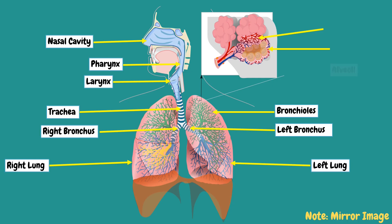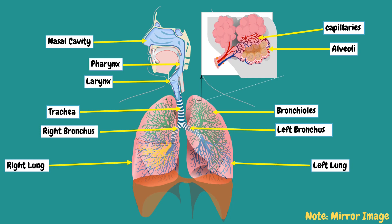Thousands of small air sacs or alveoli are at the end of each bronchiole. Within the alveolar walls is a dense network of tiny blood vessels called capillaries. The extremely thin barrier between alveoli and capillaries allows oxygen to move from the alveoli into the blood, and allows carbon dioxide to move from the blood into the alveoli.